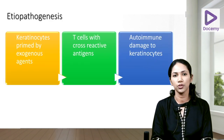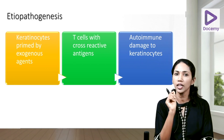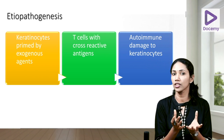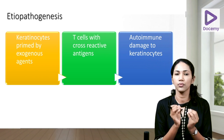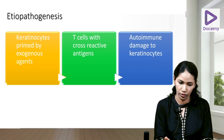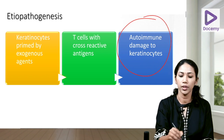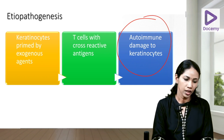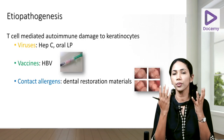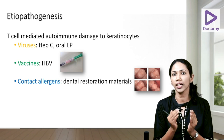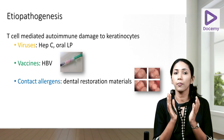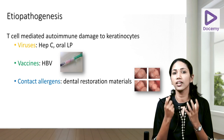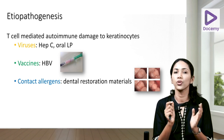Coming to the etiopathogenesis, just know one thing: there is an immune damage to the keratinocyte — the cells of which the skin is made. There is an autoimmune damage to the keratinocyte mediated by T lymphocytes. For this autoimmune damage to occur, there should be a priming or exogenous agent which triggers it.